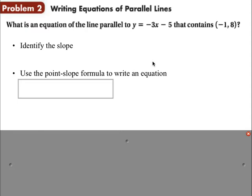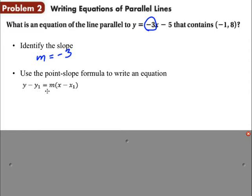What is the equation of the line parallel to negative 3x minus 5 that contains point negative 1, 8? In these problems, when we're writing the equations of parallel lines, the very first thing we need to do is identify the slope. The slope is the number in front of x, so our slope is negative 3. Then we're going to use the point-slope formula: y minus y1 equals the slope times x minus x1. The x and y without subscripts are just our variables. Since this is a parallel line, it's the same slope, so we put negative 3 in there.